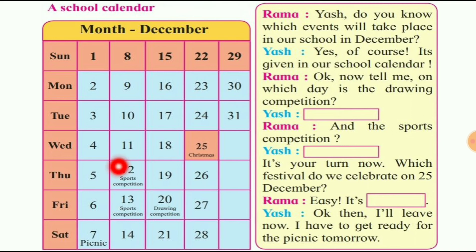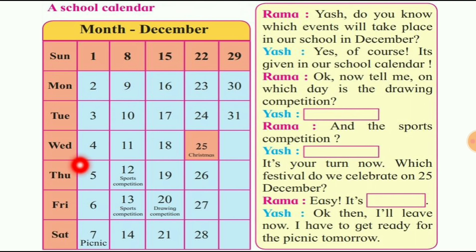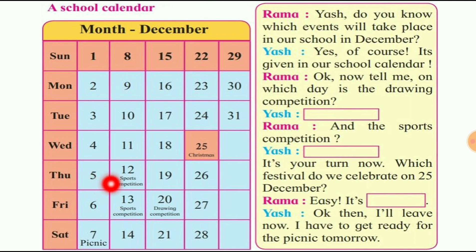Tuesday: 3rd, 10, 17, 24, 31 — 5 Tuesdays. Wednesday: 4, 11, 18, 25 — 4 Wednesdays. Thursday: 5th, 12, 19, 26 — 4 Thursdays. Friday: 6, 13, 20, 27 — 4 Fridays. Saturday: 7, 14, 21, 28.